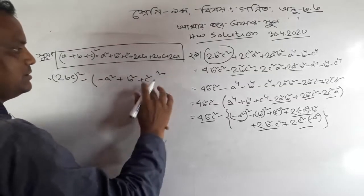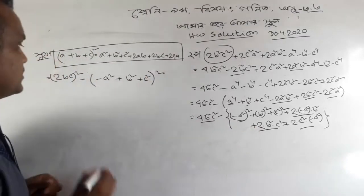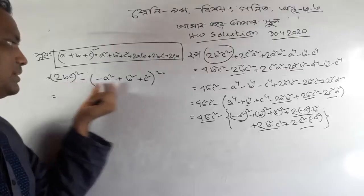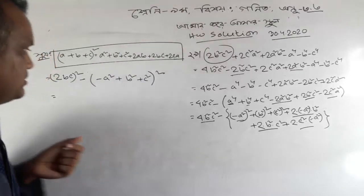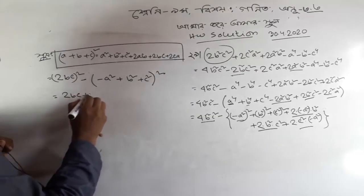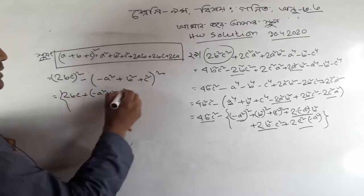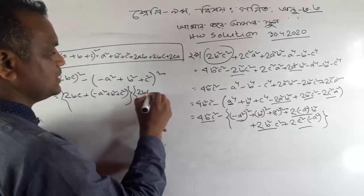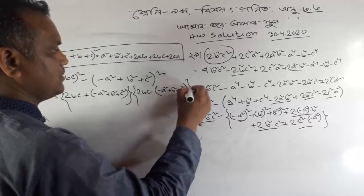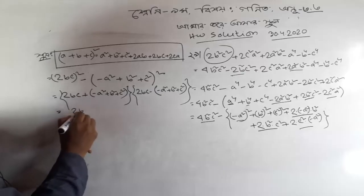A plus B plus C, squared. Look — this is the first bracket. A plus B plus B plus C, squared. Now look — A plus B, plus A minus B. So, A plus B. A plus B plus A minus B. A squared minus B squared. A squared minus B squared. So, A plus B plus A minus B. A plus B, into A minus B.